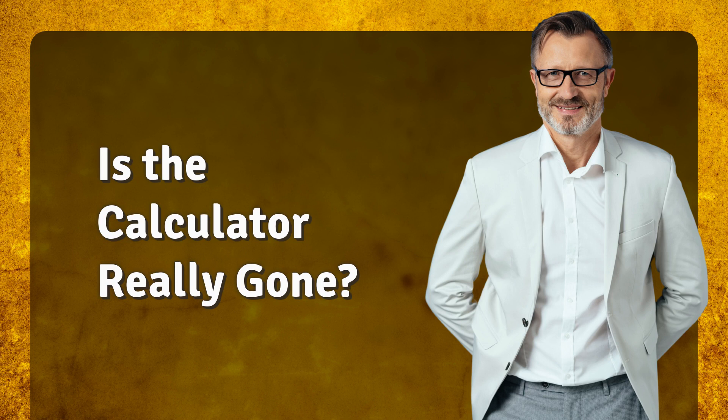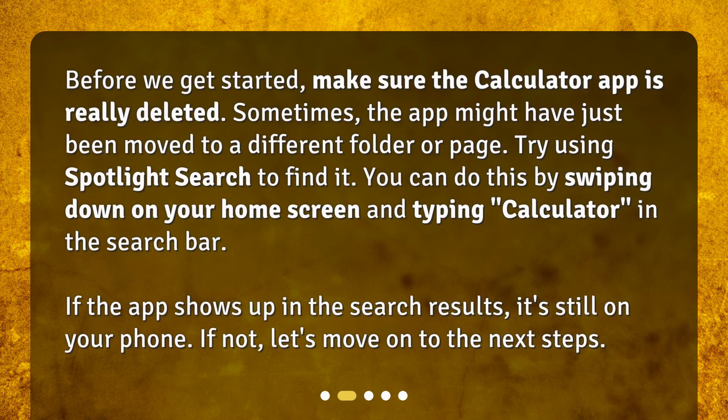Is the calculator really gone? Before we get started, make sure the calculator app is really deleted. Sometimes the app might have just been moved to a different folder or page. Try using Spotlight Search to find it. You can do this by swiping down on your home screen and typing 'calculator' in the search bar. If the app shows up in the search results, it's still on your phone. If not, let's move on to the next steps.